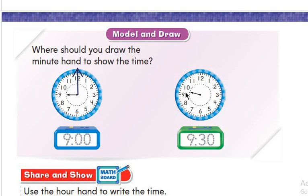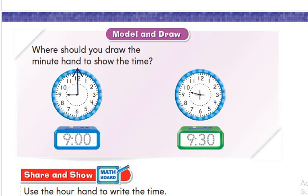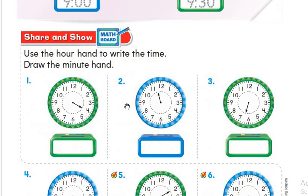If the hour hand points between 9 and 10, it is half past 9 — the number before the hour hand. The hour hand passes number 9, so half past 9, which is 9:30. The minute hand will point to number 6. So when the hour hand points between 9 and 10, the minute hand points to number 6, and the time is 9:30.